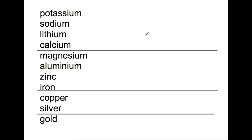Hi and welcome back to my channel. Today we're going to be looking at metal reactivity and electrochemical cells. First of all we're going to look at the reactivity series. This is a series of metals where they're ordered from most to least reactive based on their experimental reactions with oxygen, water and acid.